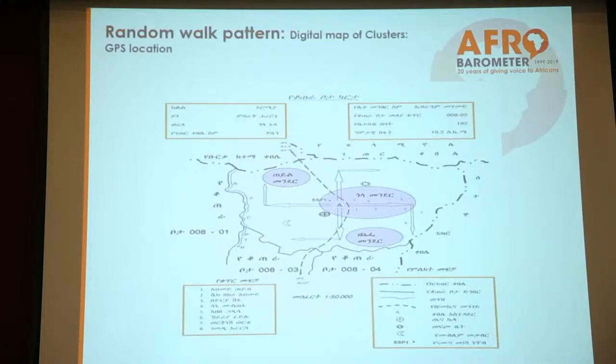This is a typical digital map of a cluster used for second-stage selection — the selection of households. As you can see, the center is the sampling starting point, from which our enumerators go into four different directions following a given standard interval. Once the household is selected, our interviewers list the male and female members of the household. A grid-type roster is used to list eligible members, and a tablet computer program then randomly draws who will be the respondent. To follow stratification, if a man is selected in the first household, a female is selected in the next, and so forth.